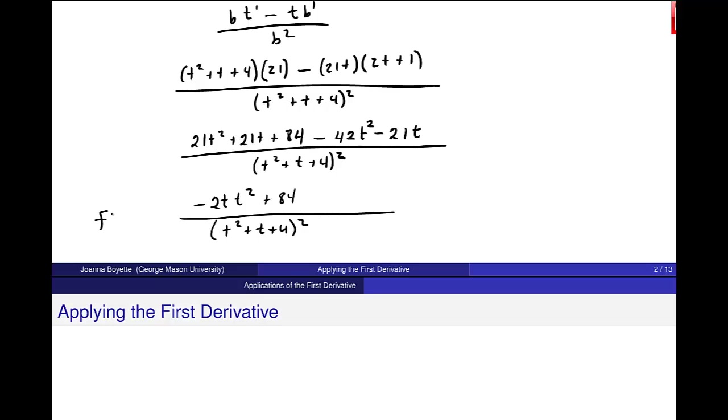Let me still simplify this. I think I get a negative 21t squared, and then the 21t drops out, and I get plus 84 all over t squared plus t plus 4 squared, and that all is my, not f prime, but what is the name of this? I think it's c prime of t, the concentration, right?